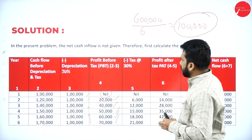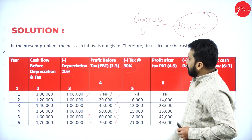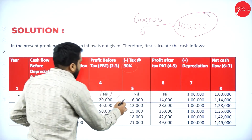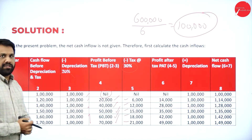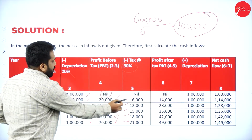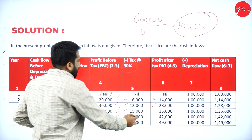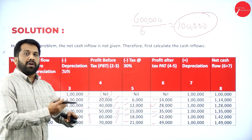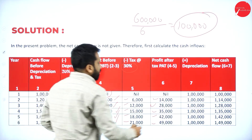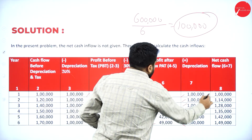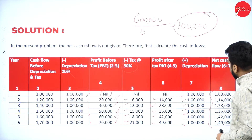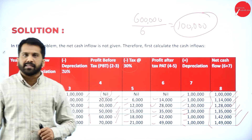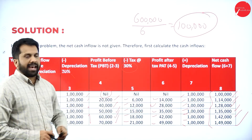After deducting depreciation, we calculate 30% tax. On nil it is zero; on 20,000 it is 6,000. Similarly for the other years. Once tax is calculated, subtract it to get profit after tax — for example 20,000 minus 6,000 = 14,000; 40,000 minus 12,000 = 28,000, and so on. Once you have profit after tax, add back the depreciation you already deducted. After adding back 1 lakh depreciation, you get net cash flows of: 1 lakh, 1 lakh 14,000, 1 lakh 28,000, 1 lakh 35,000, 1 lakh 42,000, and 1 lakh 49,000.